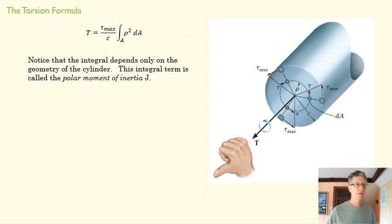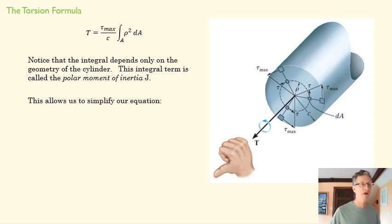That integral of ρ squared is what's called the polar moment of inertia. It's basically summing up how far away that area is from the center of the axis. And that matters here because the stress is so much bigger on the outside than it is on the inside. So this is giving a big weight to the area that's towards the edge of the cylinder.